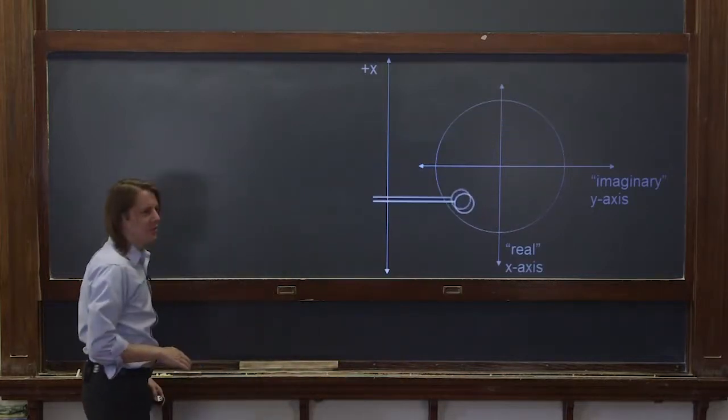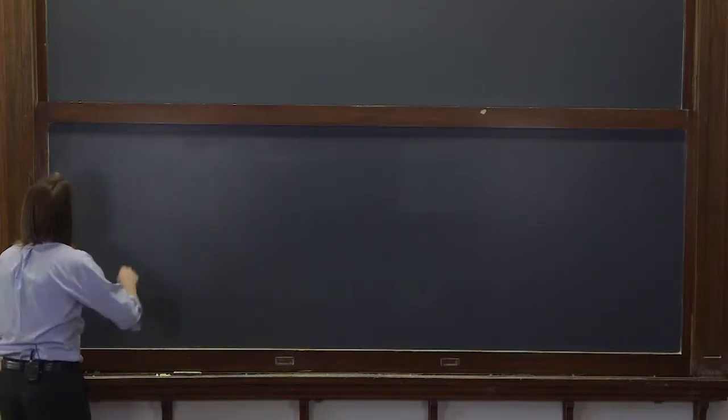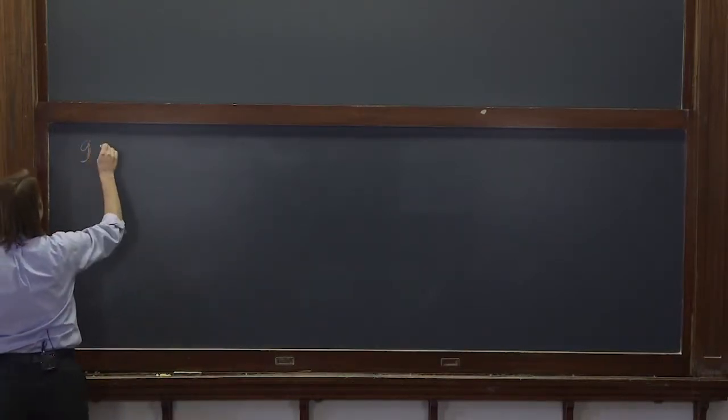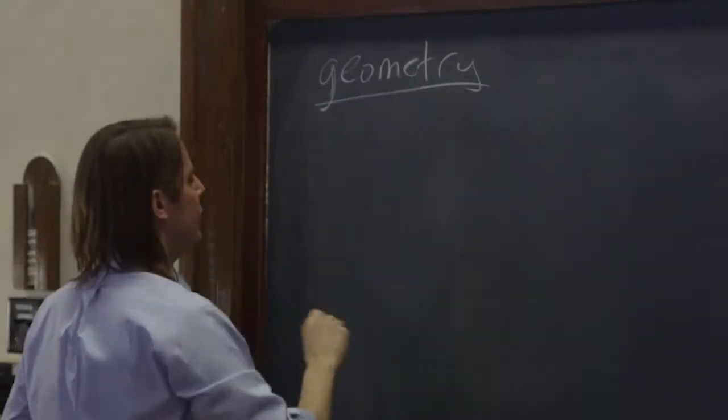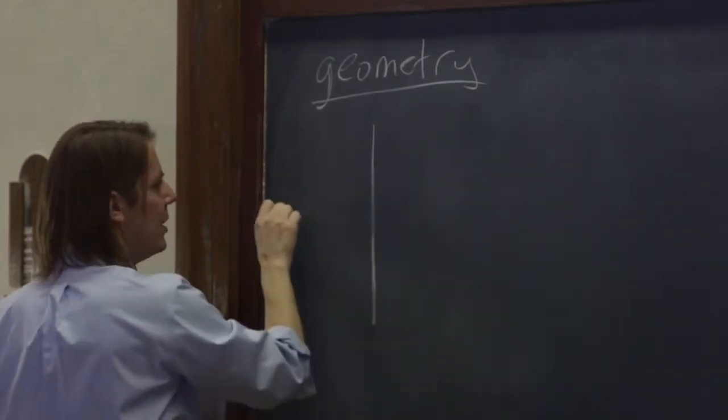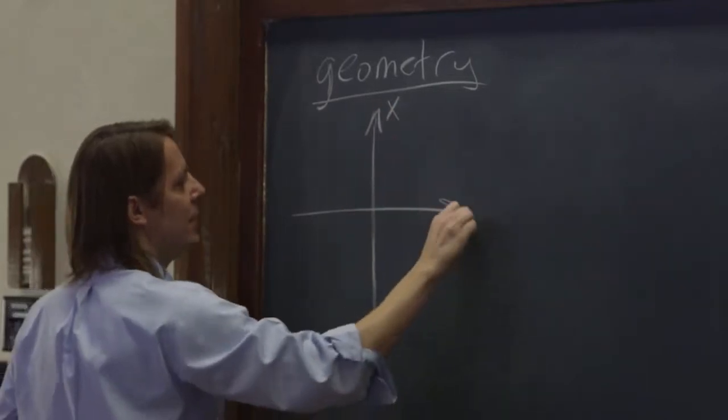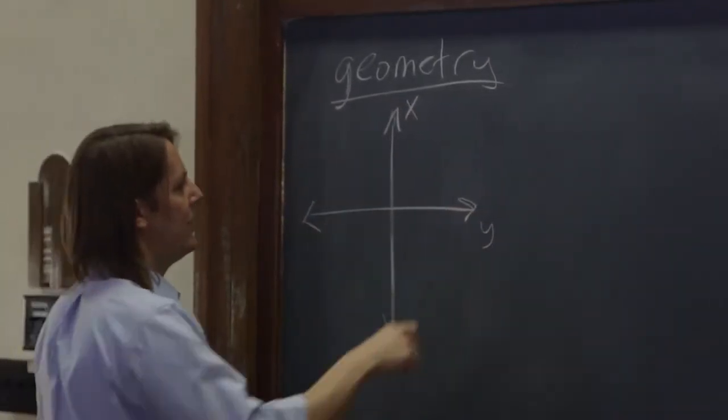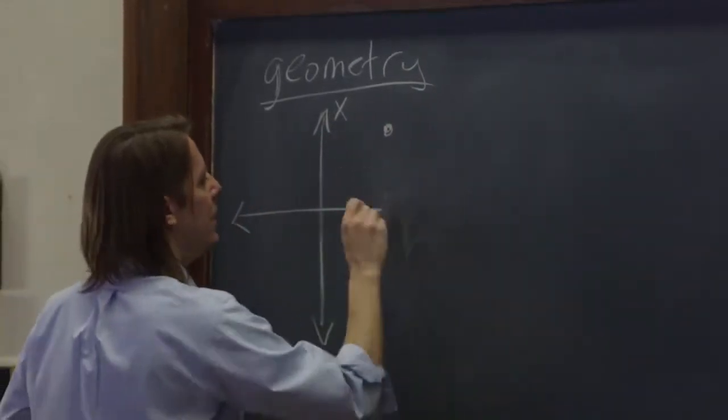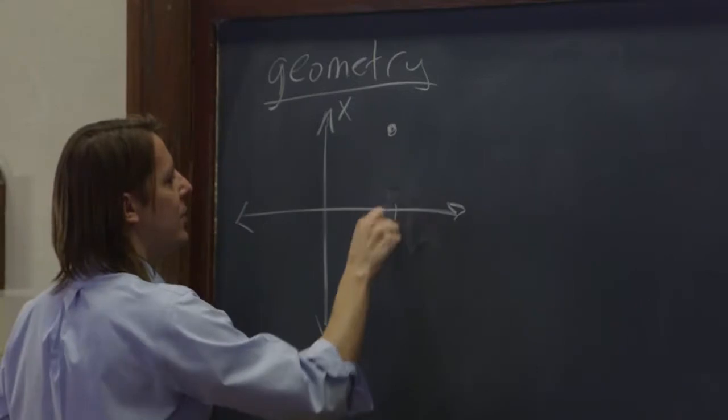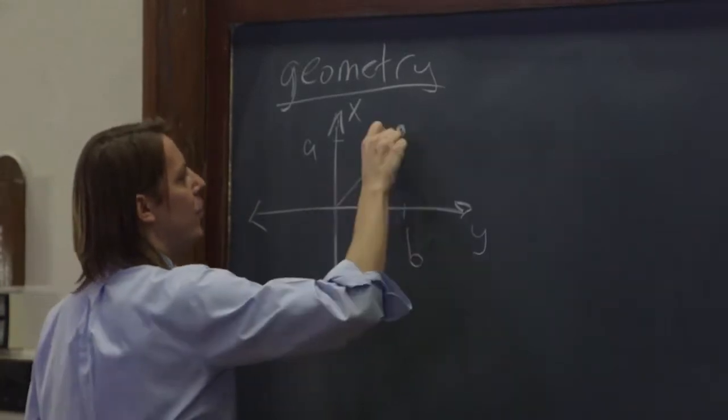So let's see where this gets us mathematically. So how do you normally describe the position of something? Usually, you do it with geometry. So if we were going to describe this position geometrically, we would draw two axes. And I'm going to label the top one x and this one y. And we'd say there's some position out here of this object going around in a circle. And we'd say it's at a point b right now on the y-axis, and then the point a on the x-axis.